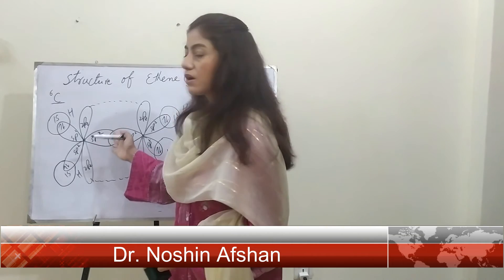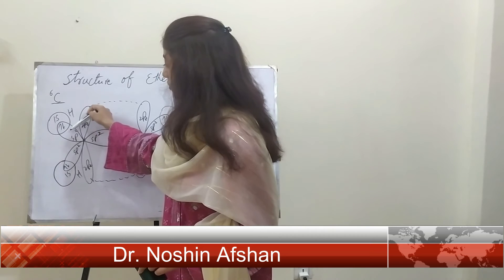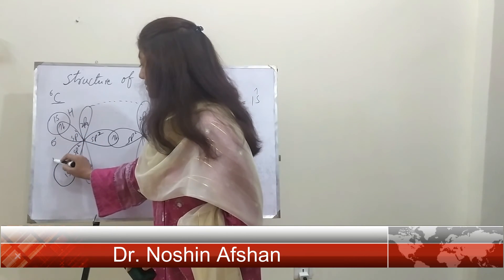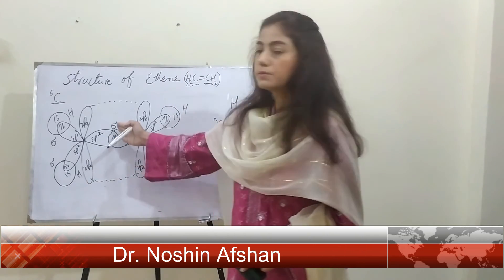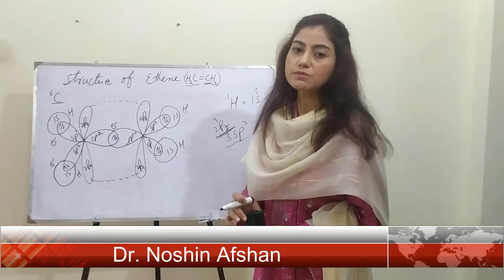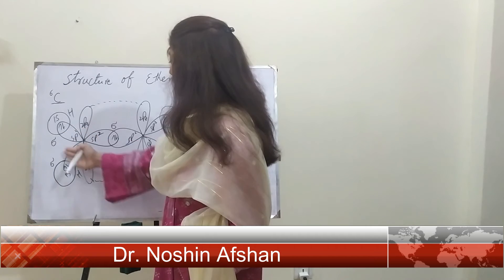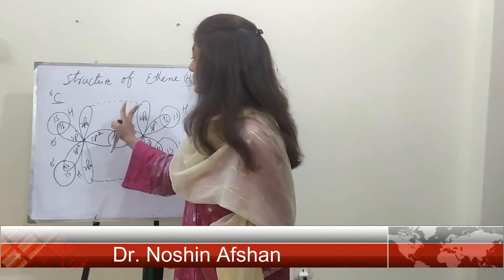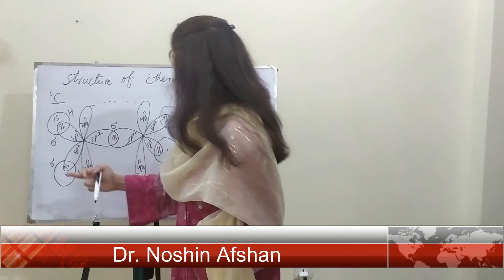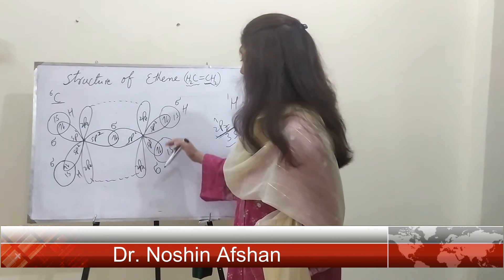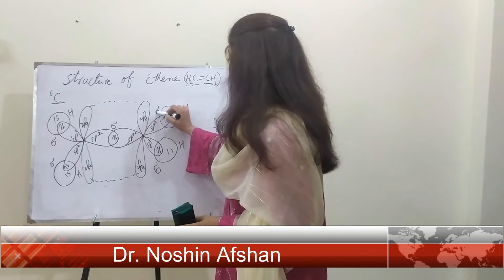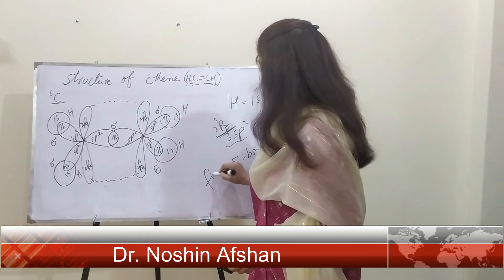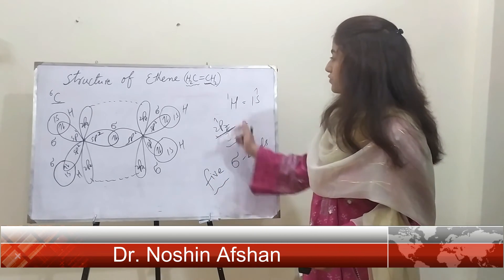Now we move toward sigma and pi bond allocation. The overlapping of sp2 with 1s orbitals gives sigma bonds. The sp2–sp2 overlap between the two carbon atoms is also accompanied by sigma bond formation. Every carbon has a total of three sigma bonds, and the shared sp2–sp2 bond between the two carbons counts as one sigma bond. So in total, there are five sigma bonds formed in ethene.